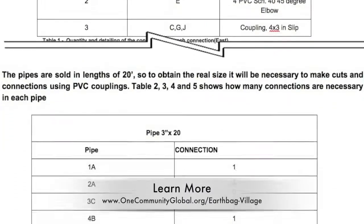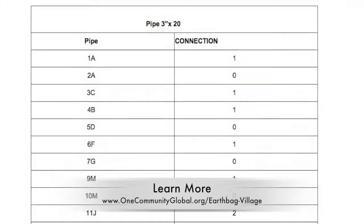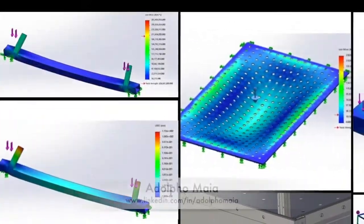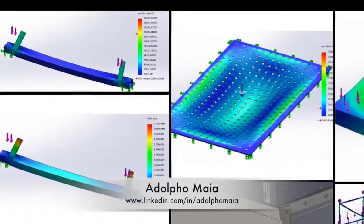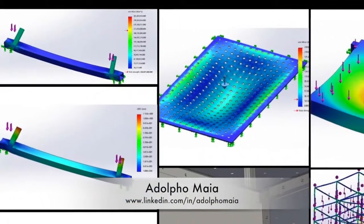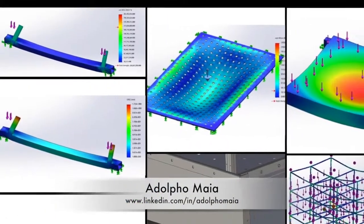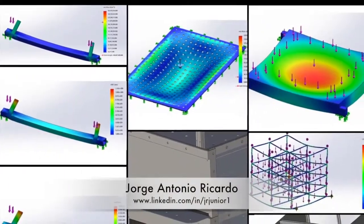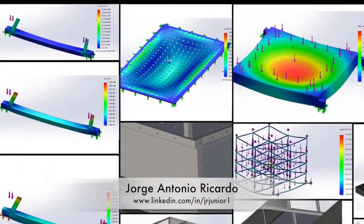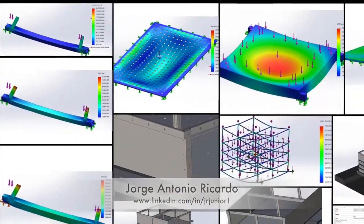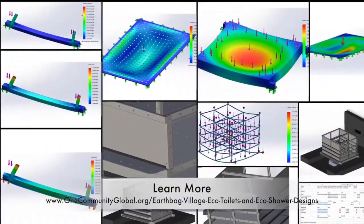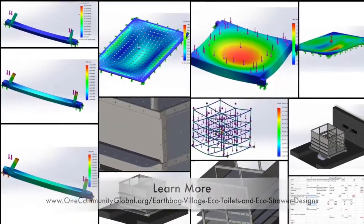Isadora Carvalho, civil engineering student, completed the cost analysis for the rainwater catchment system that will be constructed for the Earthbag Village Pod 1. This included work with prices, links to buy, and other details amounting to less than $6,000 for the complete system.